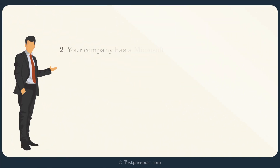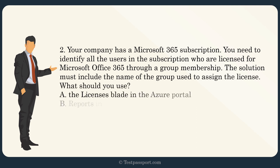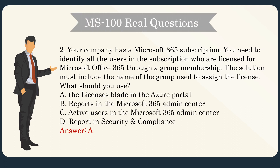Question 2. Your company has a Microsoft 365 subscription. You need to identify all the users in the subscription who are licensed for Microsoft Office 365 through a group membership. The solution must include the name of the group used to assign the license. What should you use? A. The Licenses blade in the Azure Portal. B. Reports in the Microsoft 365 Admin Center. C. Active Users in the Microsoft 365 Admin Center. D. Report in Security and Compliance. Answer: A.